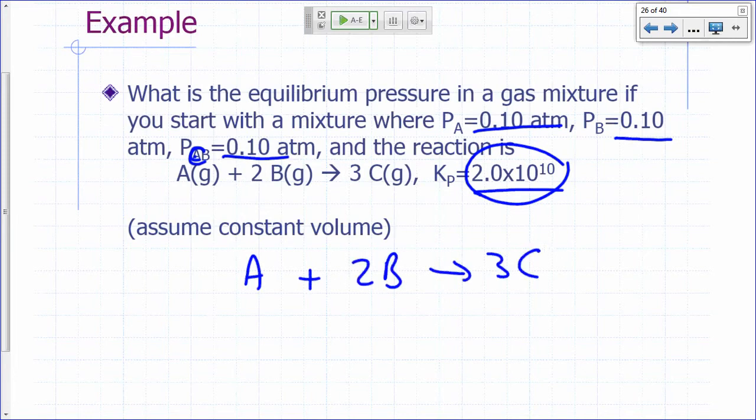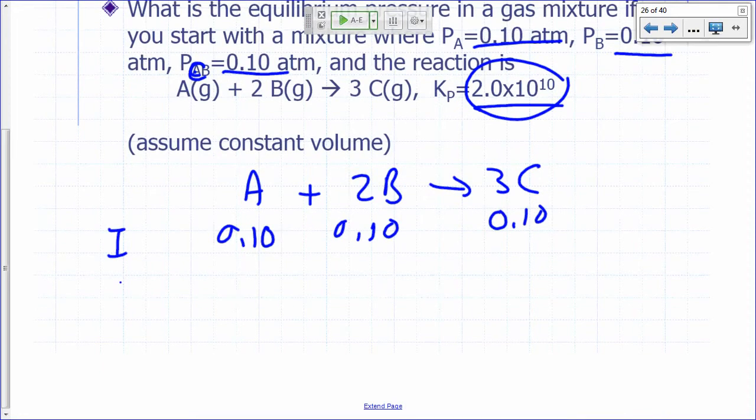So let's set up our ICE table. A plus 2B gives you 3C. Initially, you're going to have 0.1 of A, 0.1 of B, and 0.1 of C. So since we know at equilibrium it's going to be mostly products, what do you expect? What would be the changes? You're going to lose all of your A, right? Or are you? If you lose x moles of A, let's just do it. If you lose x moles of A, how many moles of B am I going to lose? 2x. How many moles of C am I going to make? 3x. Now, what should my x be so that my limiting reactant, you stop, it goes all the way.